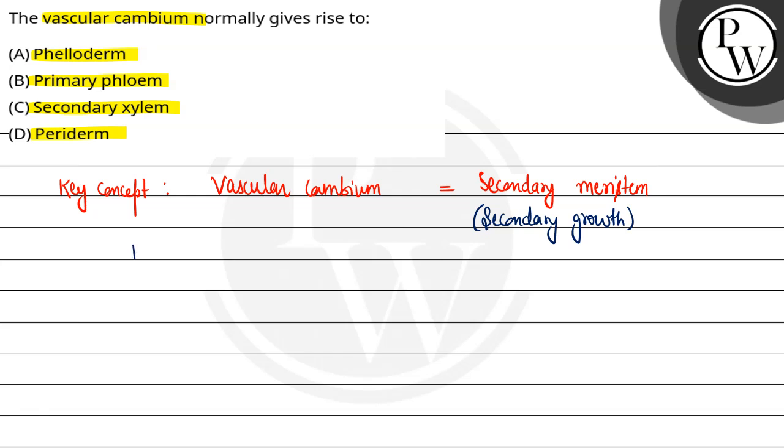Hota kya hai, jo medullary rays hoti hai, wo de-differentiate kar jati hai aur bana deti hai aage inter-fascicular cambium.